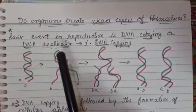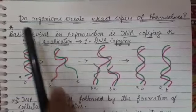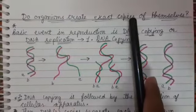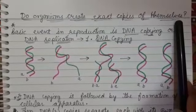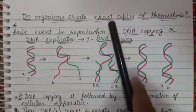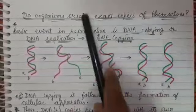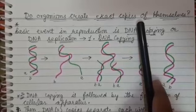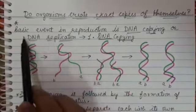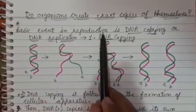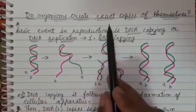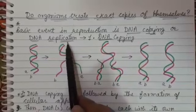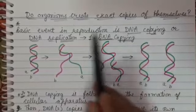Students, in this video we will try to find out the answer to the question: do organisms create exact copies of themselves? Before knowing the answer to this question, we must know how two cells are produced. The basic event in reproduction or the formation of two cells is DNA copying or DNA replication.